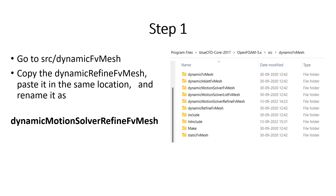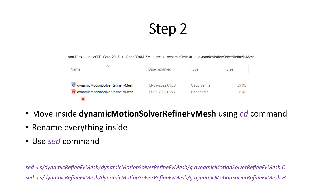Step 2: we will move inside the dynamicMotionSolverRefineFvMesh directory using the CD command in the terminal. Inside, there are two files: a .C file and a .H file. Since this was copied from dynamicRefineFvMesh, all the names inside still reference dynamicRefineFvMesh, so we need to change everything to dynamicMotionSolverRefineFvMesh.